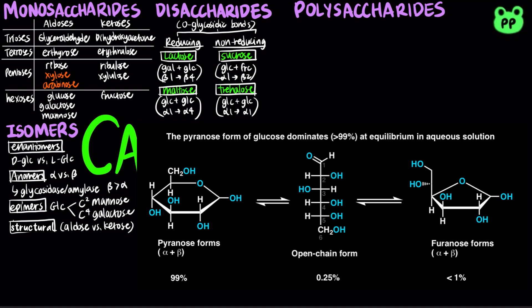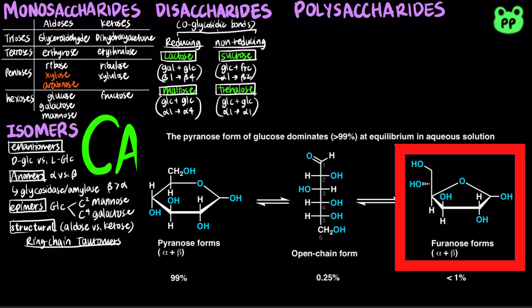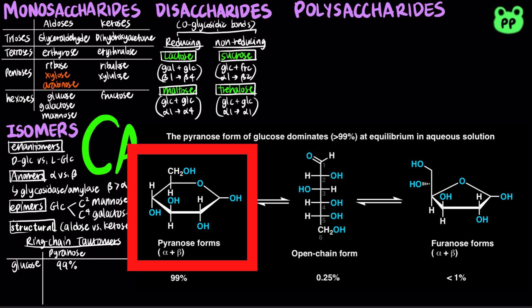Sugars exist in equilibrium between their open chain and various closed chain forms, known as ring-chain tautomerism. A six-member cyclic form is generally referred to as the pyranose form, and the five-member cyclic form is called the furanose form, each with alpha- and beta-anomers. Glucose exists 99% in the pyranose form.